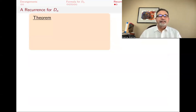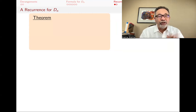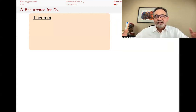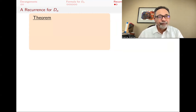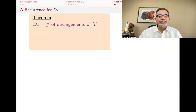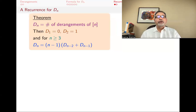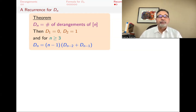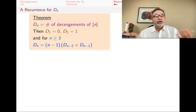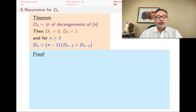I want to continue with the derangements a little bit. Usually what we do with a sequence of numbers and a formula like the one we got — which is a pretty large sum — is we look for a recurrence relation. And that's what we're going to do. D_N is the number of derangements of N, with D_1 = 0 and D_2 = 1. And for N greater or equal to 3, I want to prove that D_N equals (N-1) times (D_{N-2} + D_{N-1}).